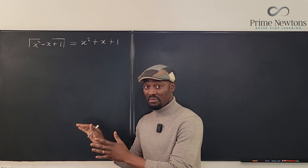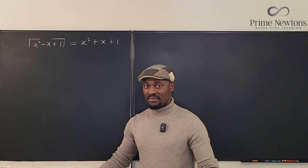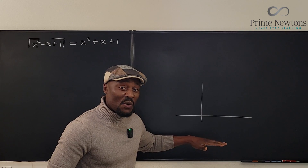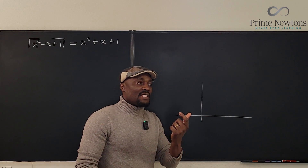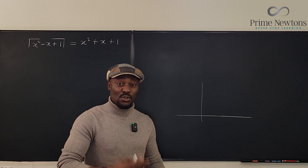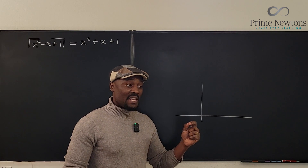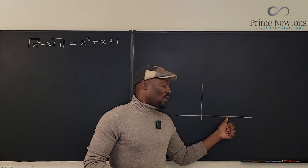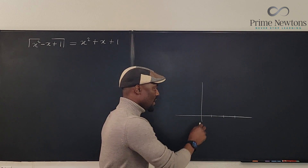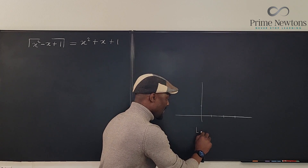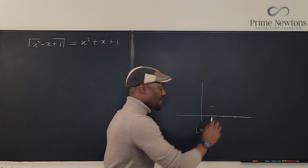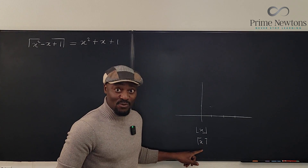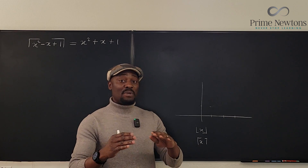There's a major concept attached to this problem — it has to do with the ceiling and the floor of a number. Every number has a floor and every number has a ceiling. Now let's talk about the special case when a number is an integer. Any integer is its own ceiling and its own floor. So if a number is 1, the floor of 1 is 1. And the ceiling of x when x equals 1 is also 1.